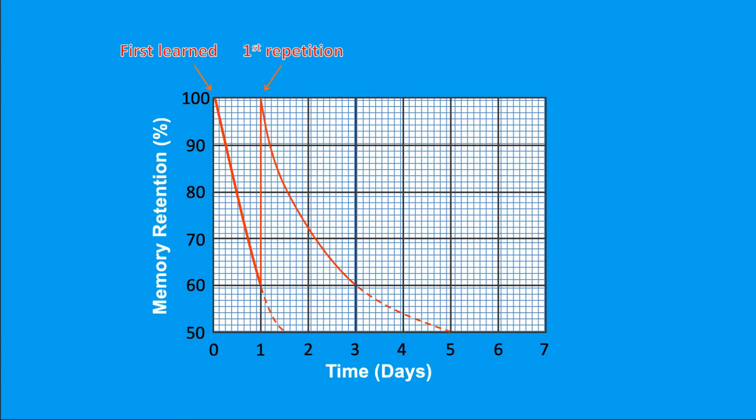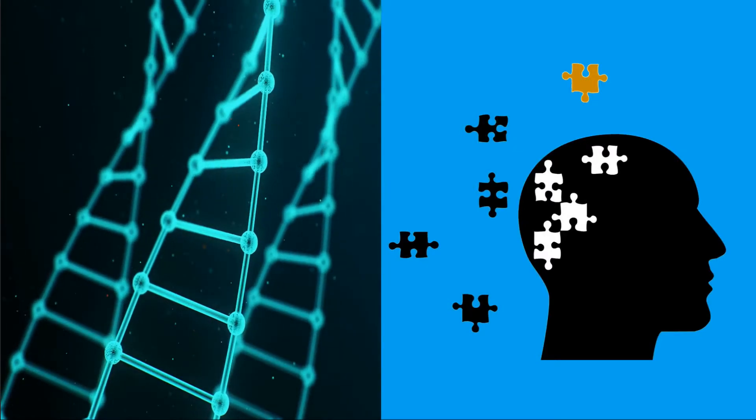Now that you have done your first repetition, this memory will take longer to fade. After the second repetition, the content stays in your memory for a longer period of time. This process continues with the gaps increasing in size.